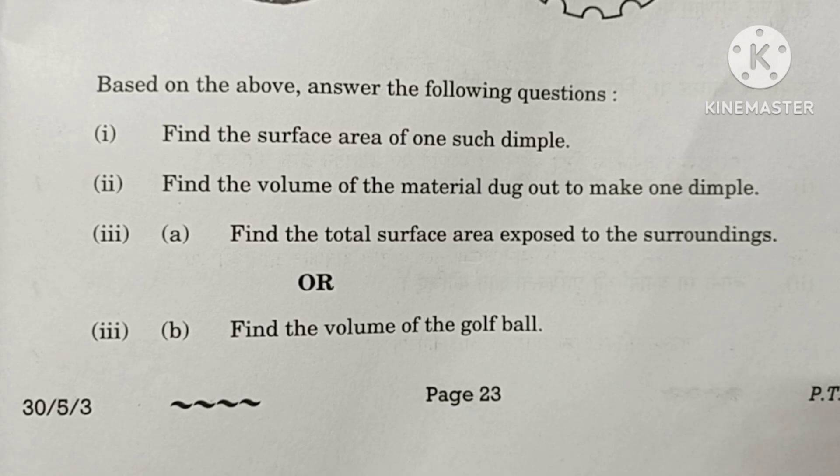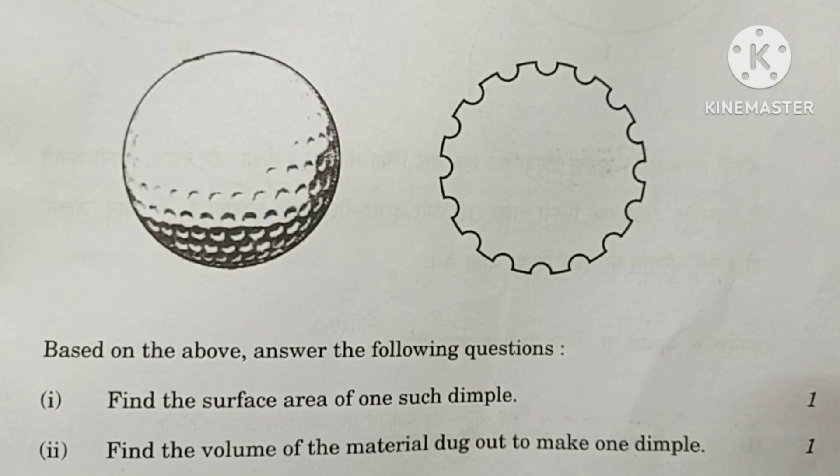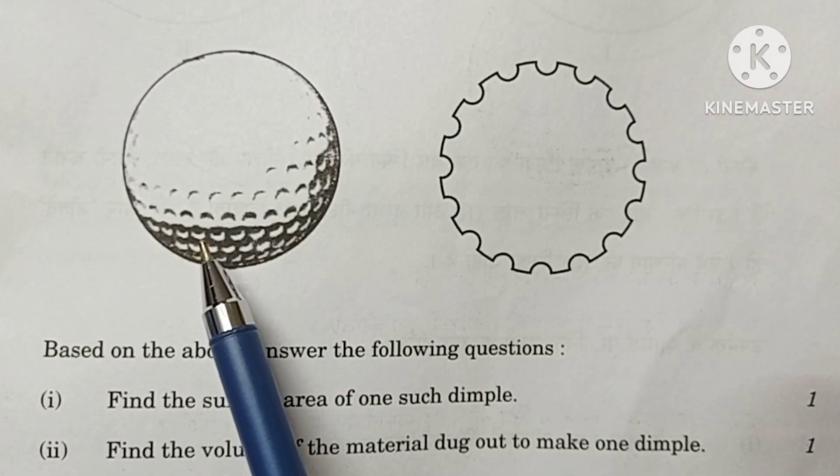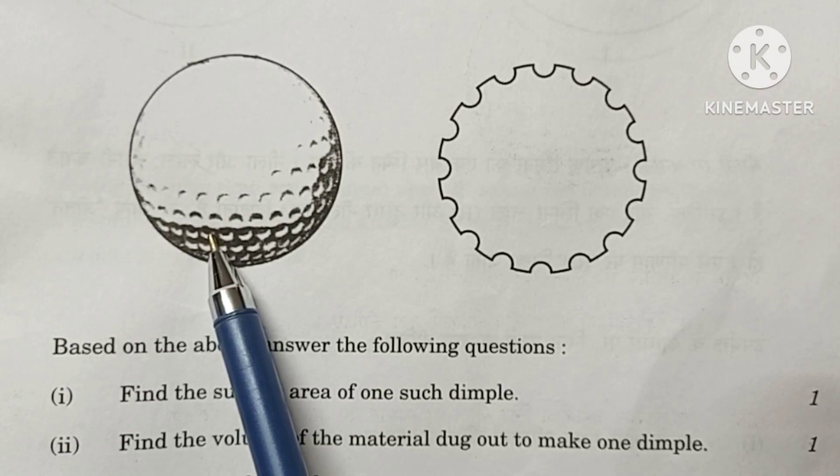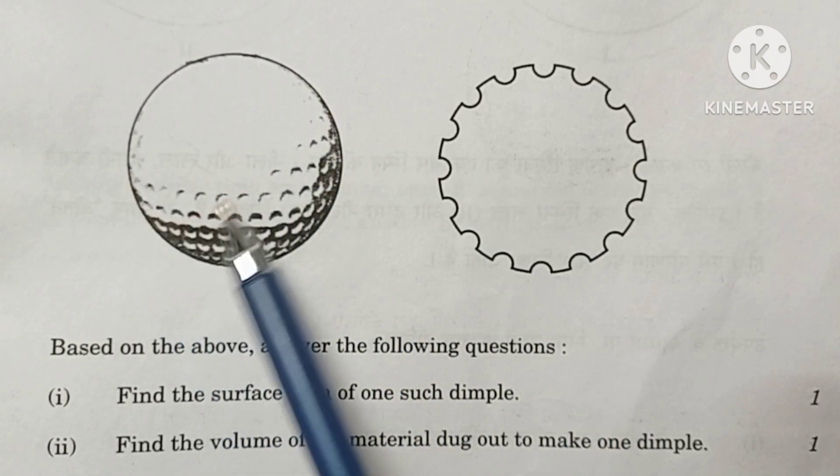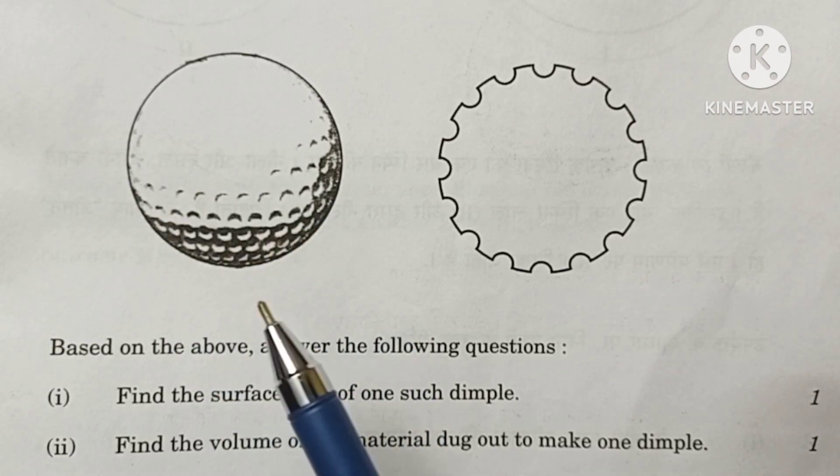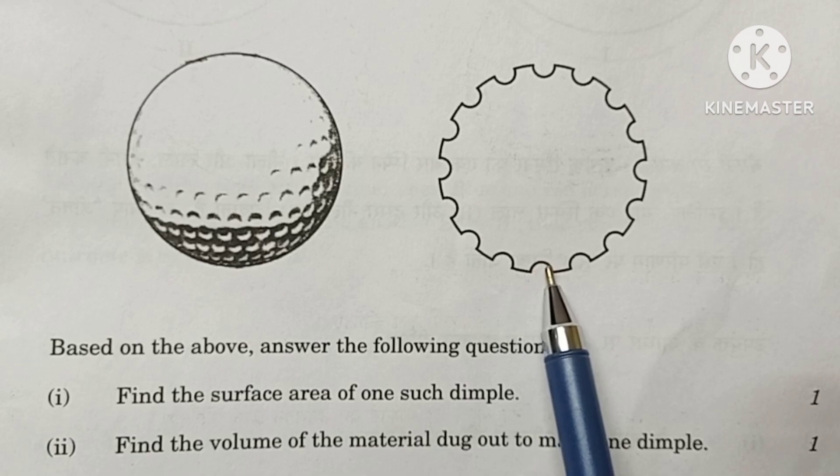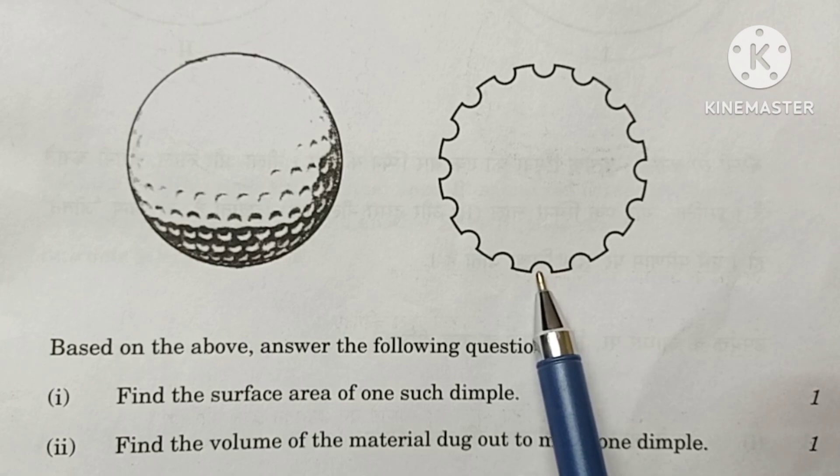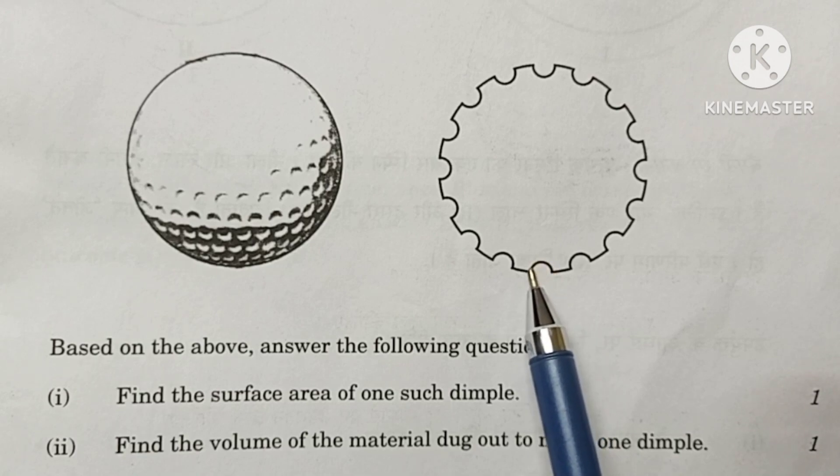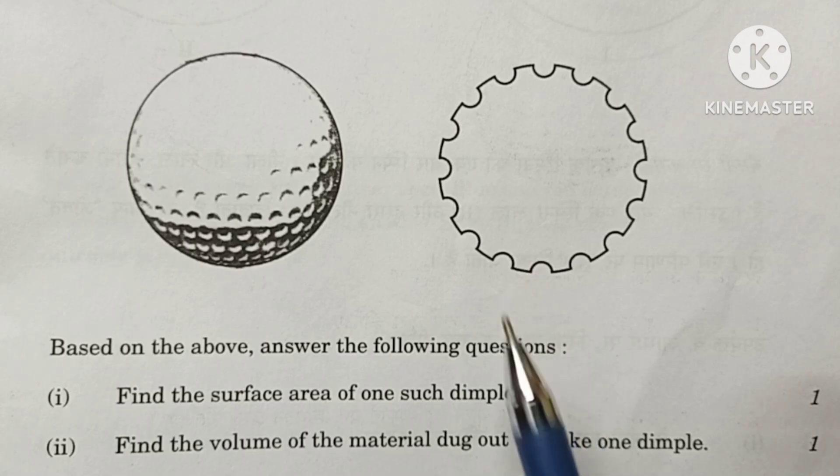You have to find the surface area of all the parts. The total surface area of the golf ball is: total surface area of the ball minus base area of 315 hemisphere. This base area is in the shape of a circle. Therefore, that circle's area you have to subtract. And you have to add the CSA of the hemisphere, 315 hemispheres. 315 hemispheres are there. We have to add the CSA of 315 hemispheres.